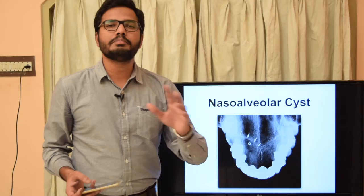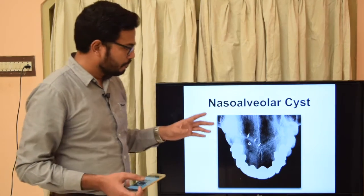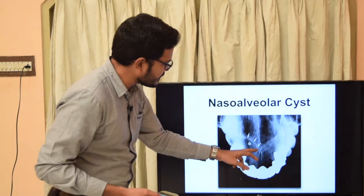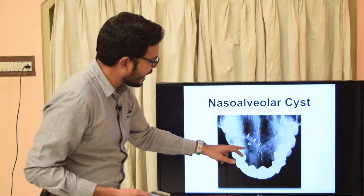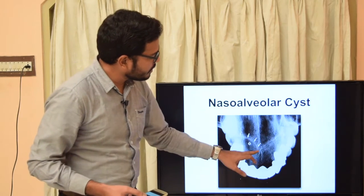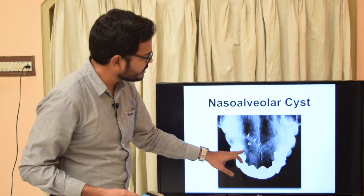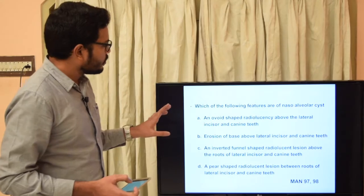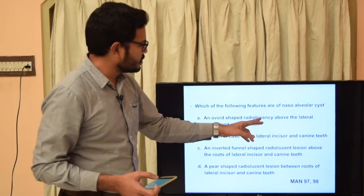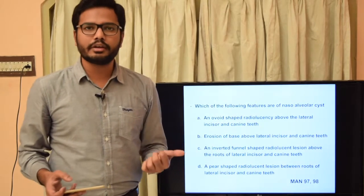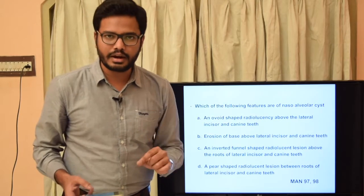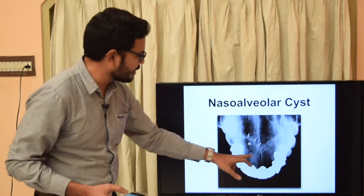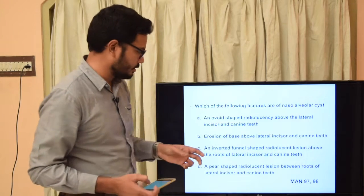Nasoalveolar cyst, also called nasolabial or Klestadt cyst, is a soft tissue cyst, so it doesn't have any particular radiographic appearance. However, because of the growth of this soft tissue cyst, there can be erosion of the base of the maxilla. This erosion appears as a radiolucent area usually at the lateral incisor and canine region, as seen in the occlusal radiograph image adjacent to the laterals and canines. So the answer is option B: erosion of the base of maxilla above lateral incisor and canine teeth.